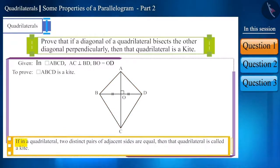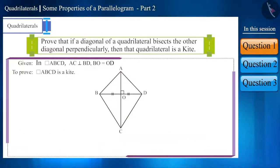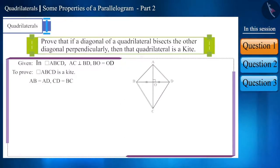Friends, if in a quadrilateral, two distinct pairs of adjacent sides are equal, then that quadrilateral is called a kite. So, if we prove that side AB is equal to side AD and side CD is equal to side BC, then it will be a kite.